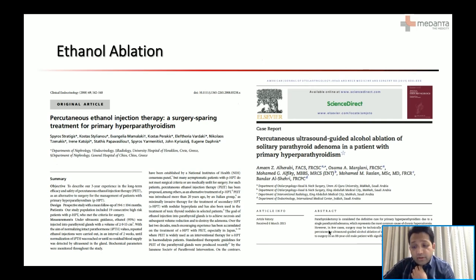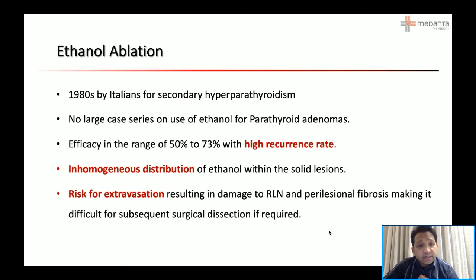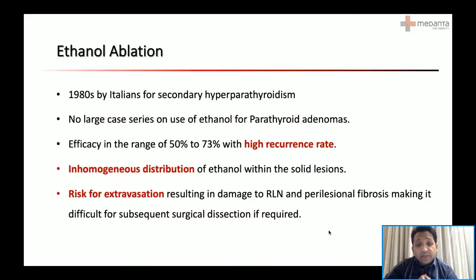Looking at ethanol ablation — though we have a small number of studies, it is one of the first developed ablation techniques, developed in the 1980s by Italians for treatment of secondary hyperparathyroidism. There are no large series on its use for parathyroid adenomas, though it has been extensively used in parathyroid cysts and secondary hyperparathyroidism. Its use in adenomas is limited by non-uniform distribution within solid lesions resulting in inadequate ablation, risk of ethanol extravasation damaging the recurrent laryngeal nerve, and perilesional fibrosis complicating subsequent surgical dissection.